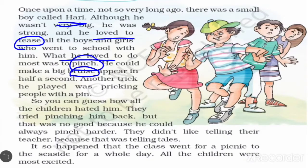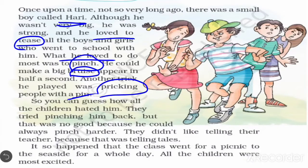Another thing he liked to do was pricking people with a pin. 'Pricking' means causing somebody to feel pain with a sharp point — he is using a sharp point to cause pain and hurt others. So this child is doing all these things at school and while going to school. Students, if someone did this to you, would you like that boy or girl? Never — we don't like this type of child. So we too must not behave this way; we have to become good boys and good girls.